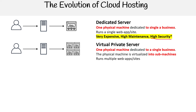Then we had virtual private servers. We're still using one physical machine, but now we've virtually isolated our application using something called virtual machines — basically into sub-machines. That allows us to run multiple workloads, because if you have different apps with different requirements, by virtualizing the machine we're now able to meet the needs of each application.